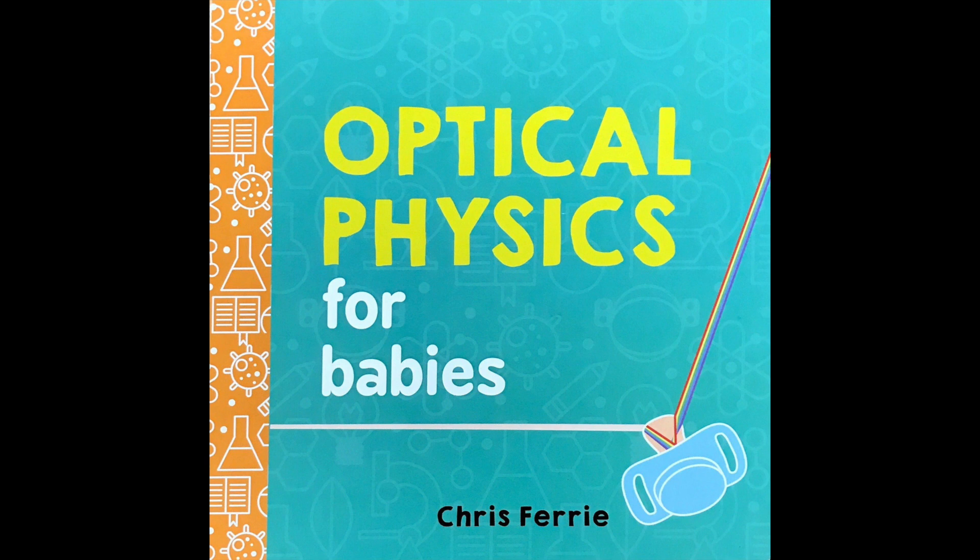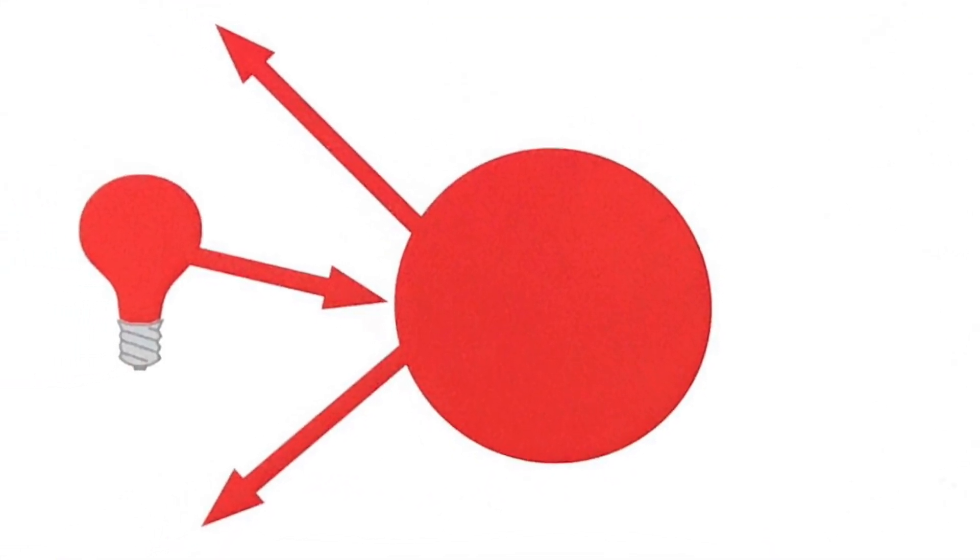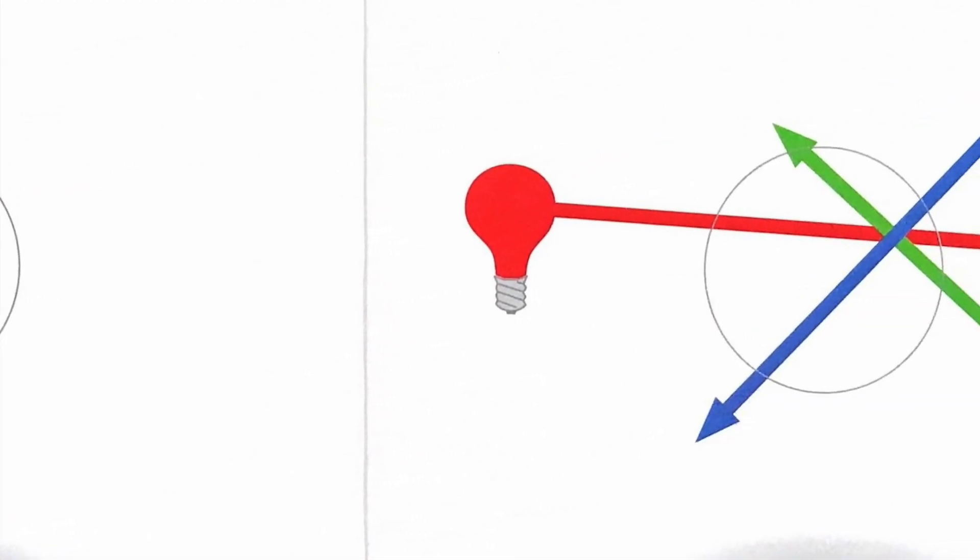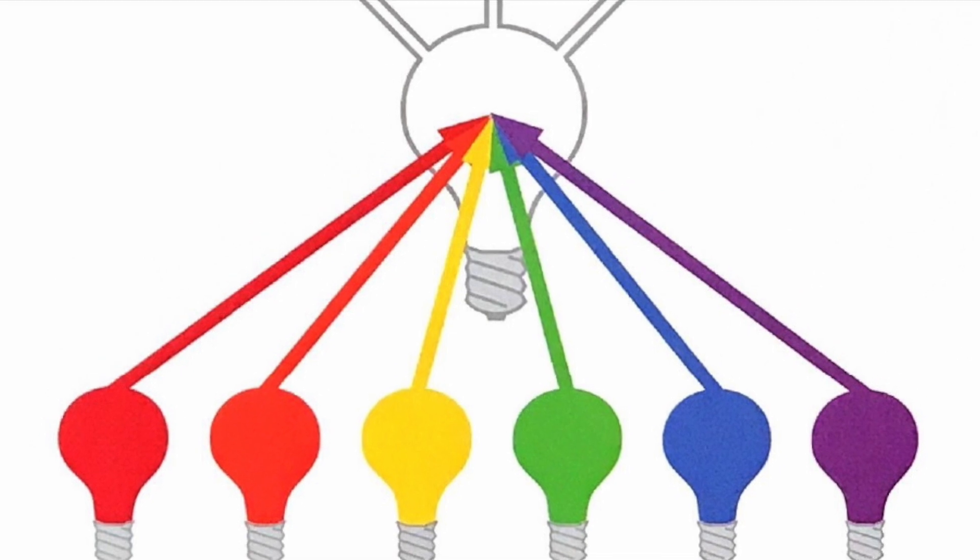Optical Physics for Babies by Chris Ferrie. This is a ball. This ball is red. It reflects red light. It absorbs blue and green light. This is a clear ball. Colors pass through it. All colors combine to make white light.